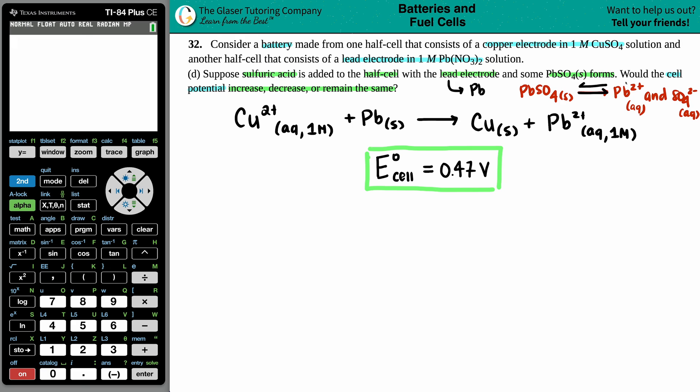Now, do we have any of these ions in our equation that could be affected? Yeah, here is the link. Pb2+ is in this equation. And now if we're taking stuff out to use to get to PbSO4, that means that I'm not going to have as much for this reaction, right?